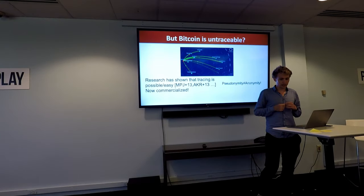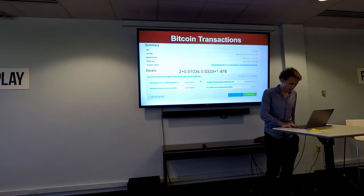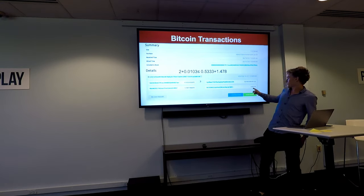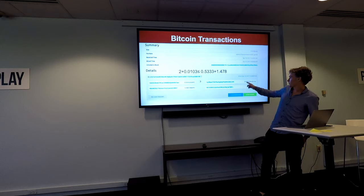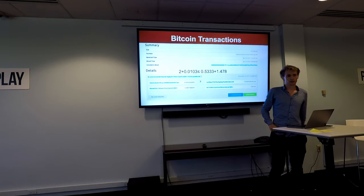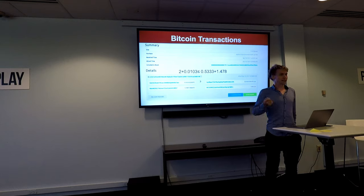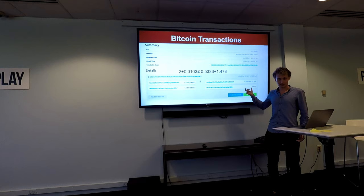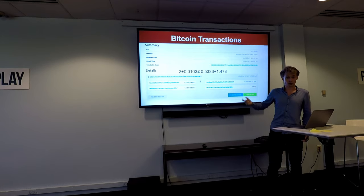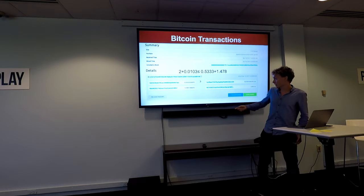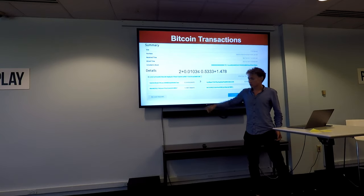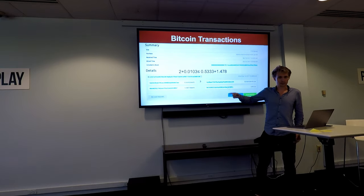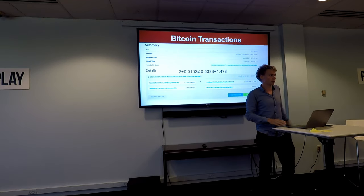Even if you don't reuse your addresses, everything is still linked together and it's pretty easy to trace transactions — especially if you have the dollar amounts attached. If I see a Bitcoin transaction with an output of two Bitcoin and an output of 0.01031 Bitcoin, which output was sent to the receiver and which was the change? It's obvious the round amount — two Bitcoin — was sent to the receiver. Simple heuristics like that work amazingly well.